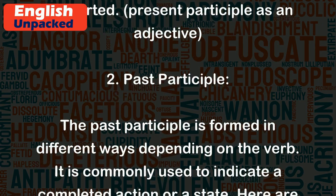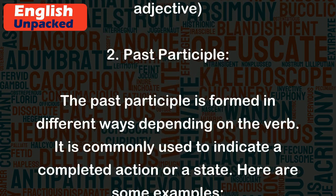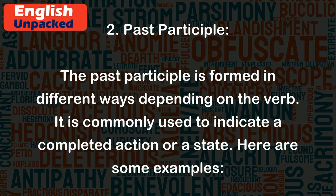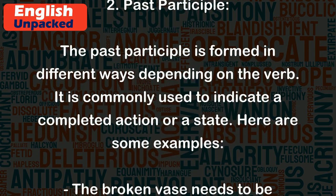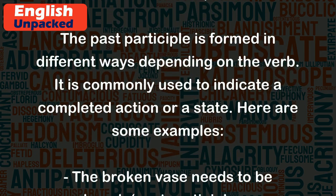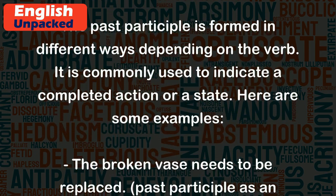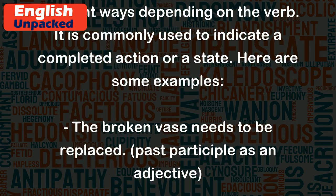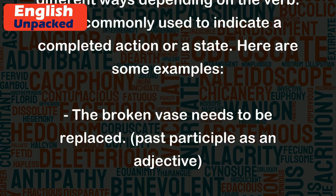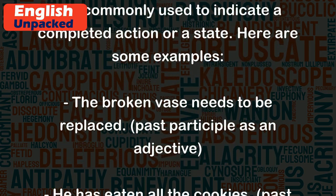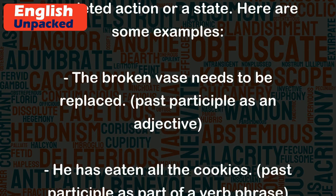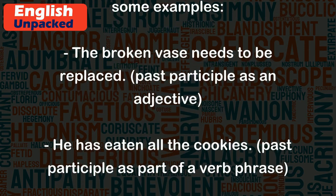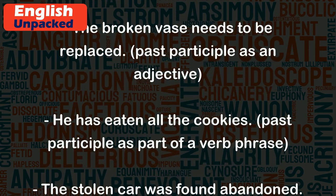Past participle: The past participle is formed in different ways depending on the verb. It is commonly used to indicate a completed action or a state. Here are some examples: The broken vase needs to be replaced — past participle as an adjective.